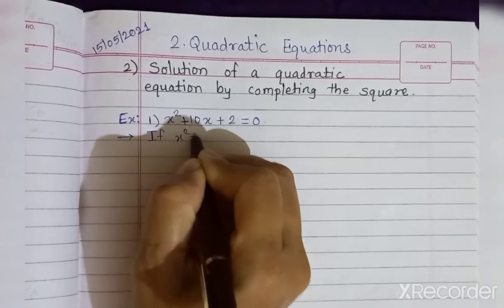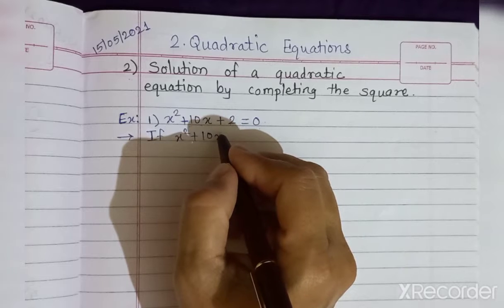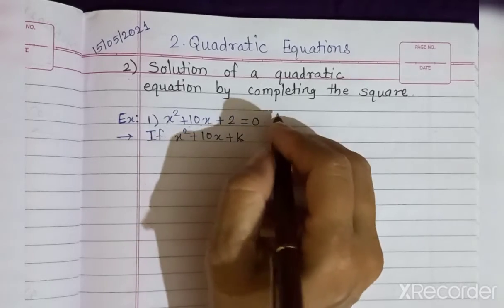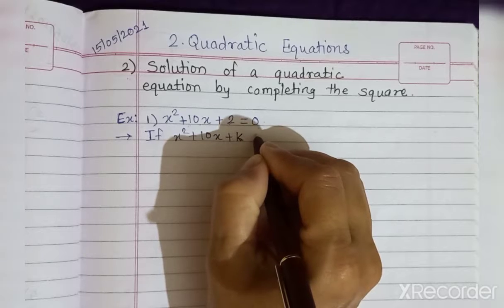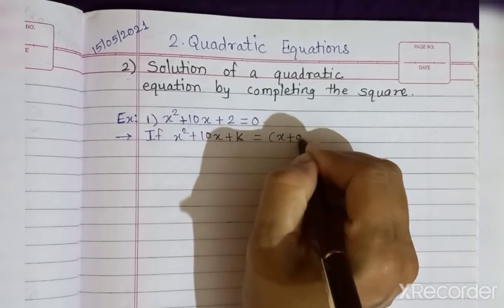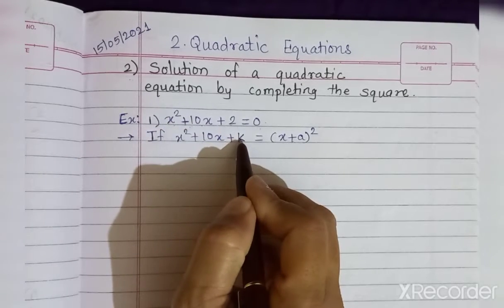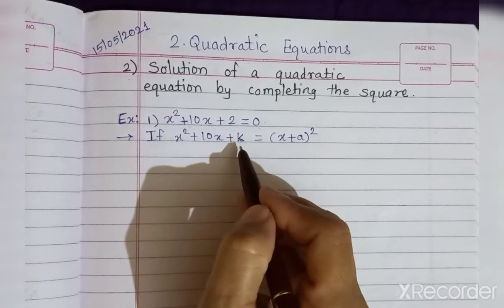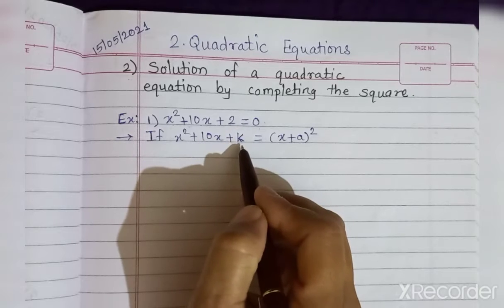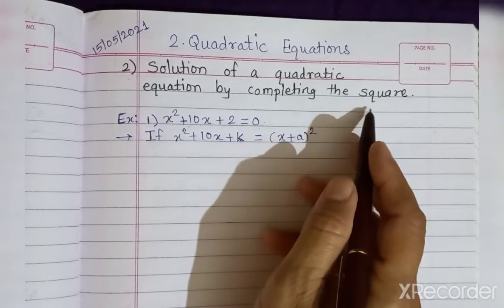We are going to add a suitable term - let's call it k, a constant number. After adding this suitable term k, we get a complete square of the form (x + a)². So I am going to find out what k is by using the completing square method.